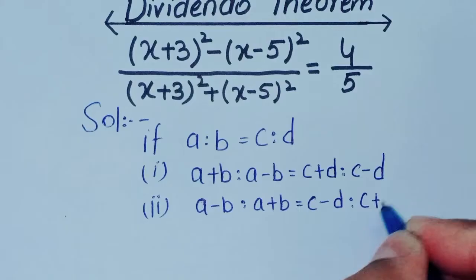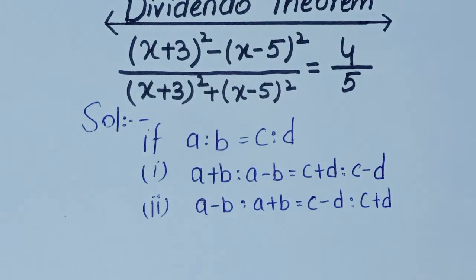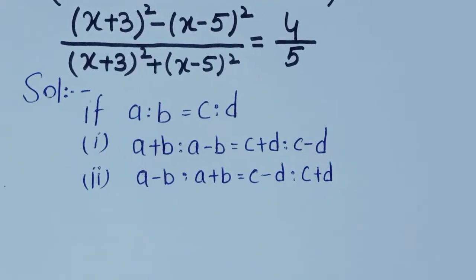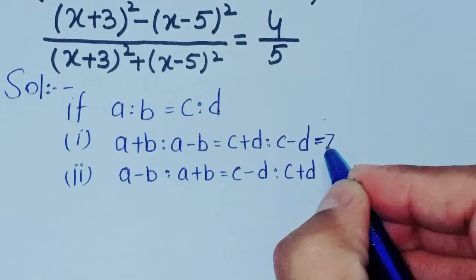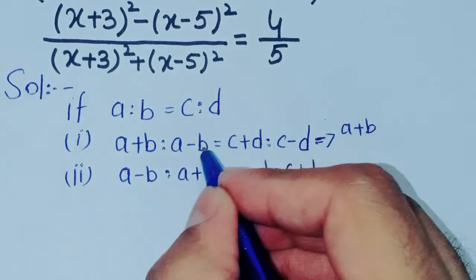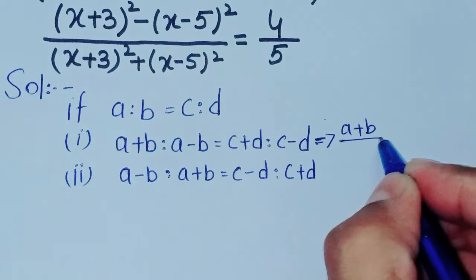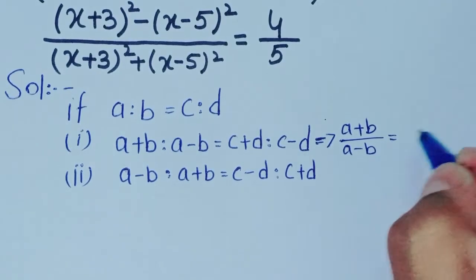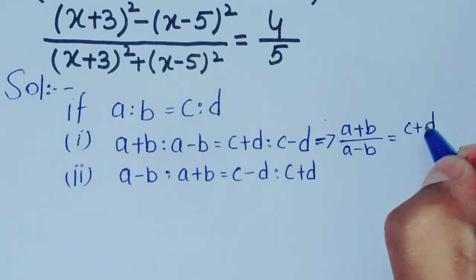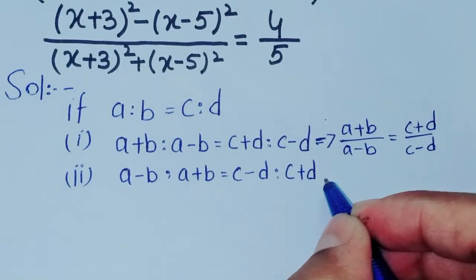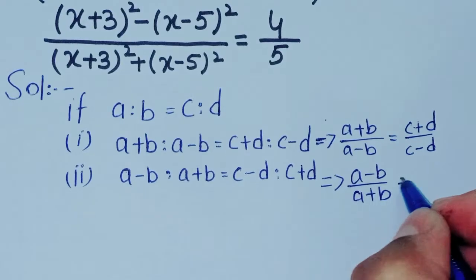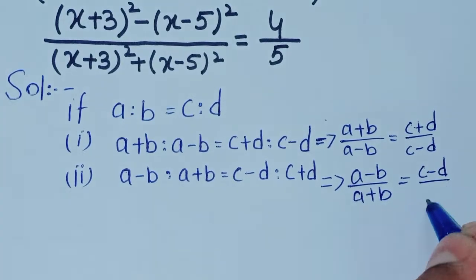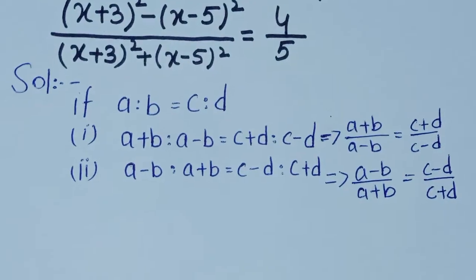And second, a minus b ratio a plus b is equal to c minus d ratio c plus d. This is the componendo-dividendo theorem. We can also write it as: a plus b over a minus b is equal to c plus d over c minus d, and a minus b over a plus b is equal to c minus d over c plus d.